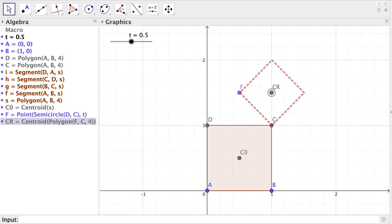Now let's define the centroid of a square defined by the points F and C. We call it CR and in a similar way we can create the centroid CL of the square defined by the points D and F on the left side.